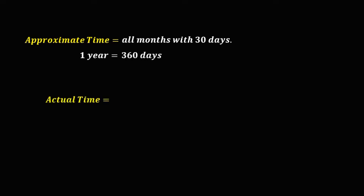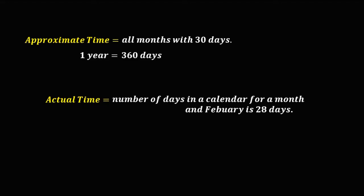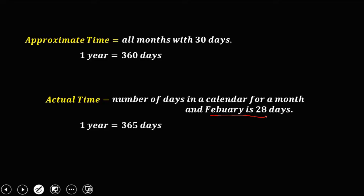Solving for the actual time and approximate time. For the approximate time, all months have 30 days, so one year equals 360 days. For the actual time, we use the number of days in a calendar — February has 28 days — so one year equals 365 days. Now we have this given: find the actual and approximate time from March 16, 2017 to August 23, 2017.